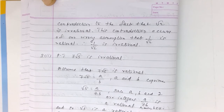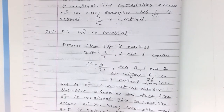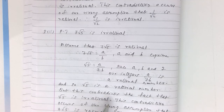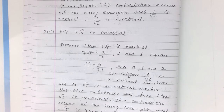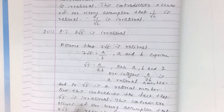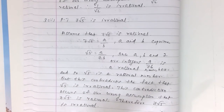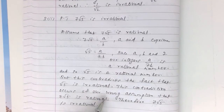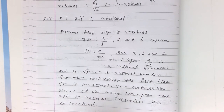But this is a contradiction, since it contradicts the fact that root 5 is irrational. This contradiction occurs because of our wrong assumption that 7 root 5 is rational. Therefore, 7 root 5 is irrational.